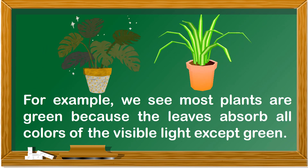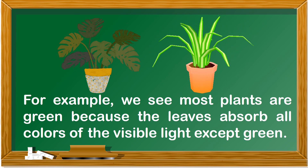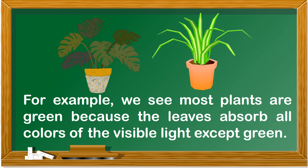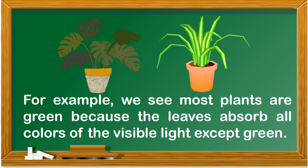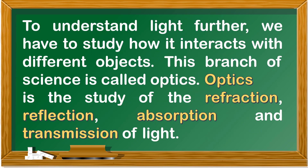For example, we see most plants are green because the leaves absorb all colors of the visible light except green. To understand light further, we have to study how it interacts with different objects. This branch of science is called optics. Optics is the study of refraction, reflection, absorption, and transmission of light.